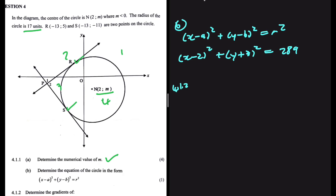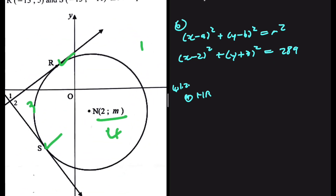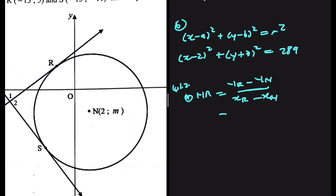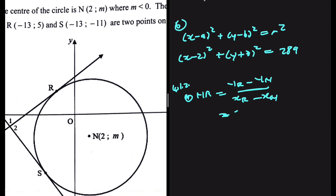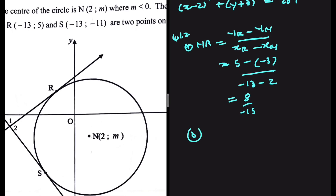Moving to 4.1.2: determine the gradient of NR. We have the coordinates of both R and N, so this is straightforward. Gradient of NR equals (y_R minus y_N) divided by (x_R minus x_N). y_R is 5, y_N is minus 3, x_R is minus 13, x_N is 2. So gradient NR equals 8 divided by minus 15.